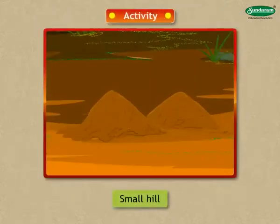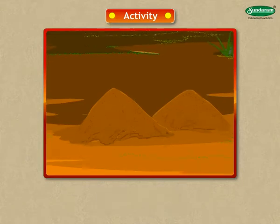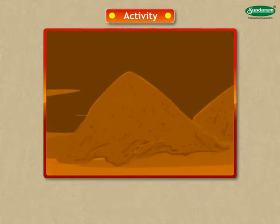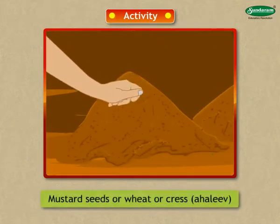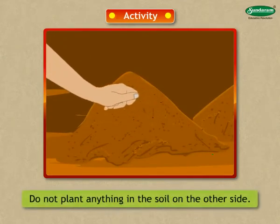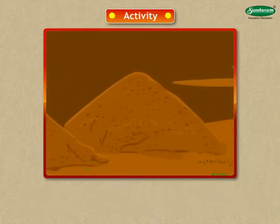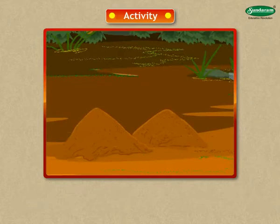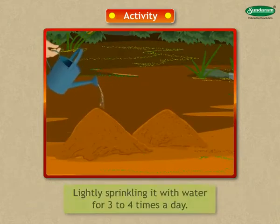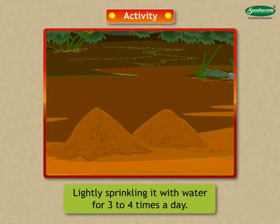Let's turn to an activity. Make a small hill in an open space by piling up some soil on a heap of stones. On one side of this hill, plant some mustard seeds, wheat, cress, or halive. Do not plant anything on the other side. Where the seeds have been planted, keep the soil moist by lightly sprinkling it with water 3 or 4 times a day.